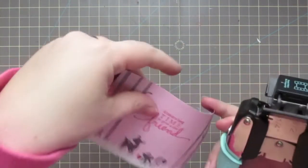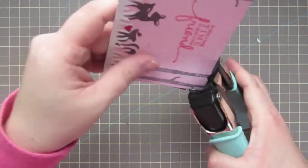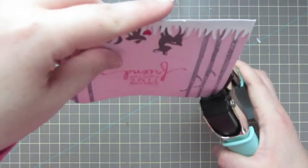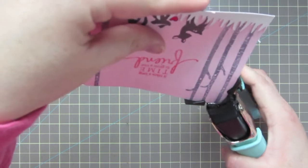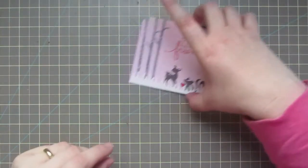I'm going to take my corner rounder and use the half-inch setting to round the top corners. Then I'll set that aside while we assemble our card.